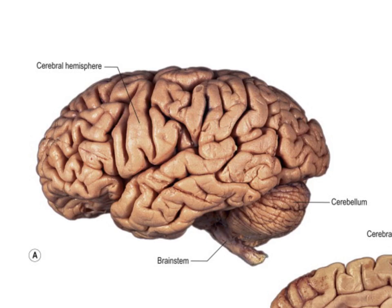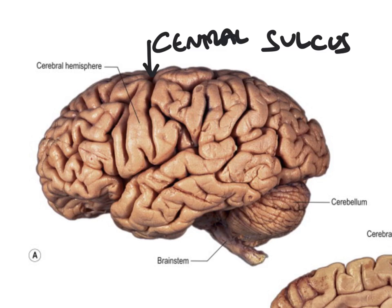The first important landmark I'd like you to identify is this groove here - this is a sulcus. The sulci are the spaces in between the adjacent gyri, which are the raised areas. This is a large sulcus running in the coronal plane, and this is called the central sulcus. The central sulcus is really important as a landmark in the brain, because it tells us where the primary motor and sensory cortices can be found.